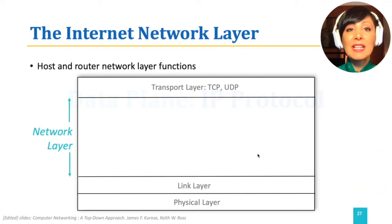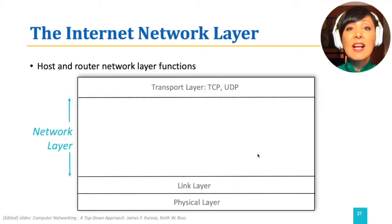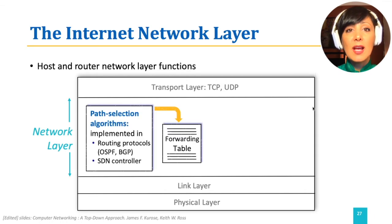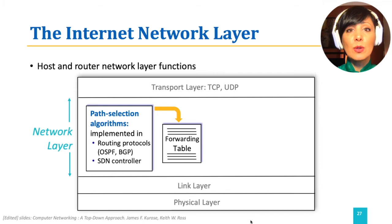The network layer of the internet consists of a set of protocols running in the data and control plane. Routing protocols run on a pair of routers in a control plane, or on an SDN controller in a centralized way.